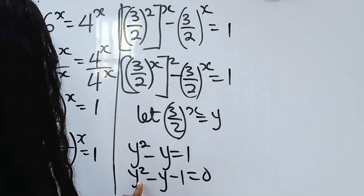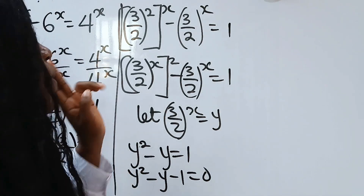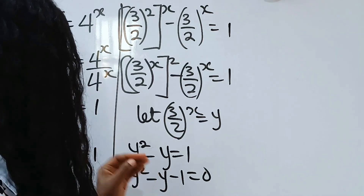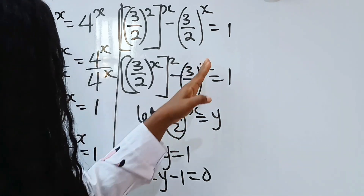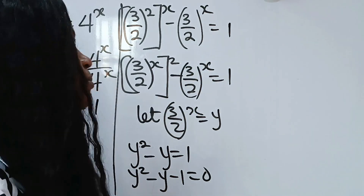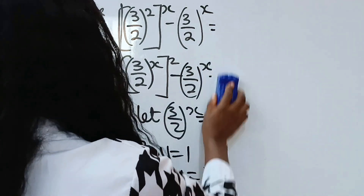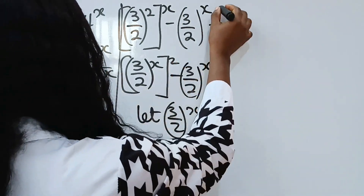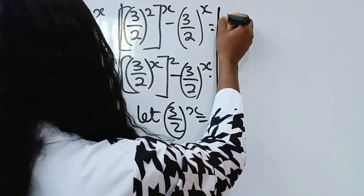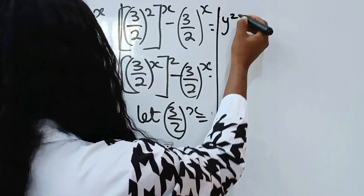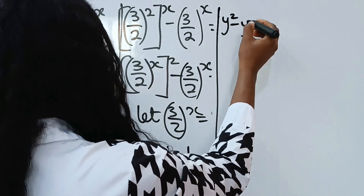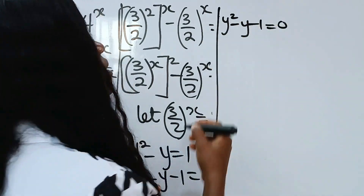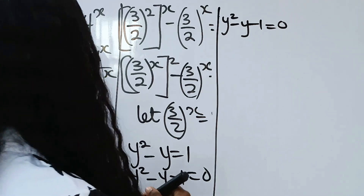But because we are not looking for the value of y — we are looking for the value of x — watch to the end to see how we get x from y. So I'm going to rewrite the equation we formed: y squared minus y minus 1 equals 0.